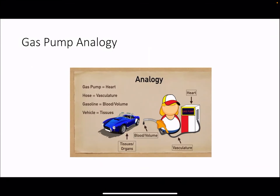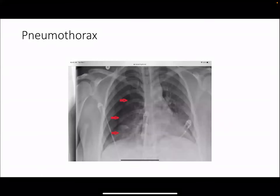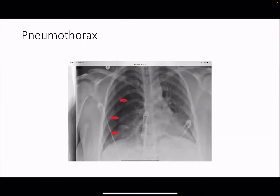The next type is obstructive shock — that's when the gas hose is blocked, meaning something is blocking the blood vessel. Causes of obstructive shock are pneumothorax, cardiac tamponade, or pulmonary embolism. Pneumothorax is increased intrathoracic pressure — that's the pressure inside your chest cavity — which decreases blood getting back to the heart.